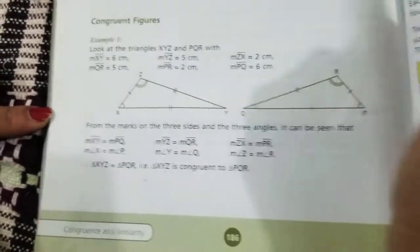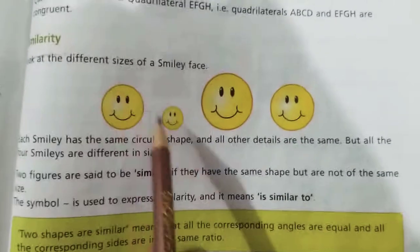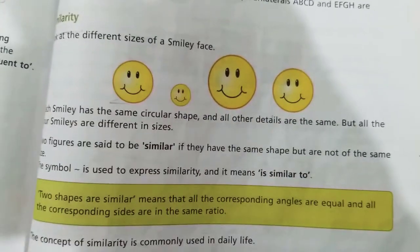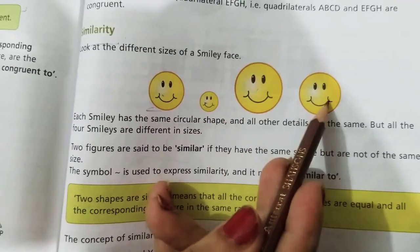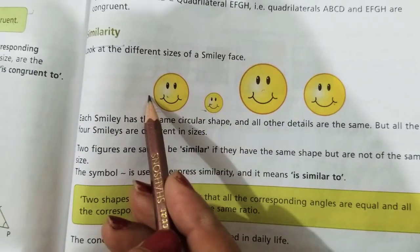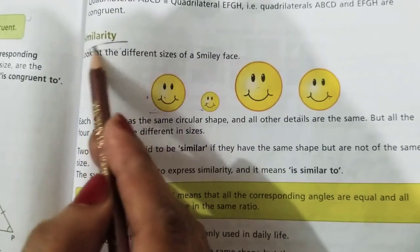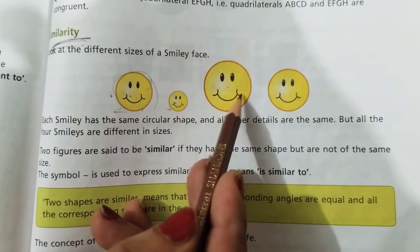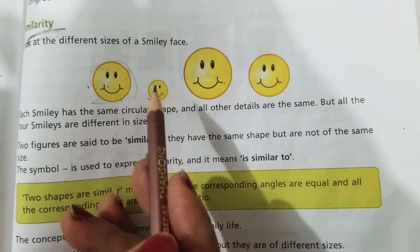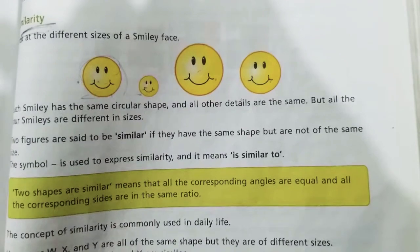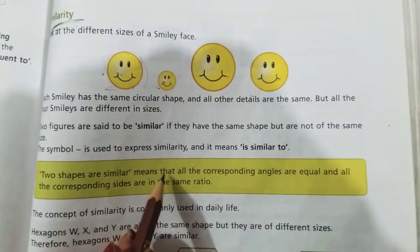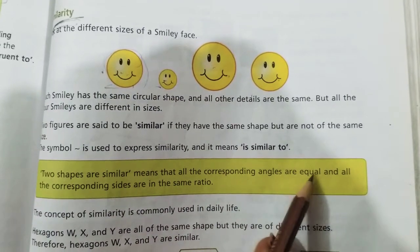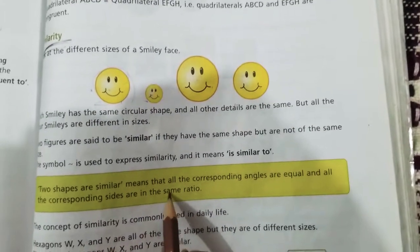Now similarity kya hoti hai? Look at the similarities. Similar figures have the same shape — the same 'look' — but sizes are different. In similarity, the size does not need to be the same, but the shape should be the same and the ratios should be the same. From the definition: two shapes are similar if all corresponding angles are equal and all corresponding sides are in the same ratio.